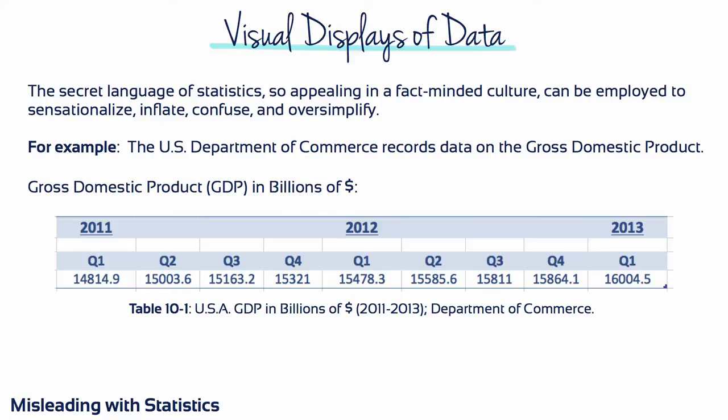Statistical methods and statistical terms are necessary in reporting the mass data of social and economic trends, business conditions, opinion polls, the census. But without writers who use the words with honesty and understanding, and readers who know what they mean, the result can often be semantic nonsense.